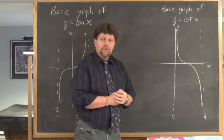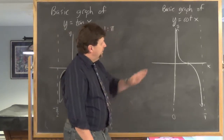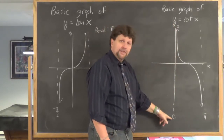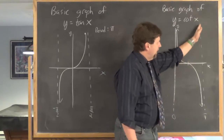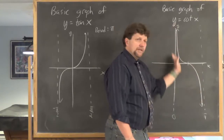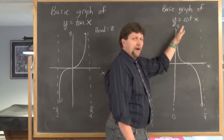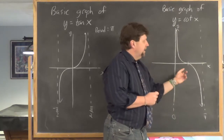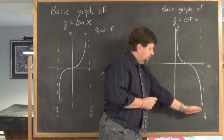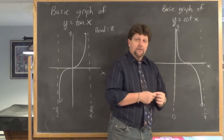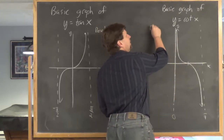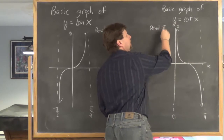Here is the basic graph of cotangent x. It has a left vertical asymptote at the y-axis, so that's x equals 0, and then a right vertical asymptote at pi. It has this type of shape — the basic graph of cotangent has always decreasing behavior. This is the graph over one period, from 0 to pi, so the period for cotangent is the same as the period for tangent. Make a note: it has a period of pi.